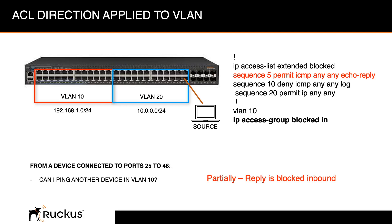To fix the partially blocked scenario, we can add a new statement to our ACL. We've added sequence 5: before the block, we permit ICMP any echo-reply. So we're still not permitting ping — we're just allowing ping replies. Now, if I'm a device coming from VLAN 20, I can ping across to VLAN 10, and that device can reply. Its reply is now allowed to get back to VLAN 20. Devices in VLAN 10 still can't initiate a ping anywhere, but this fixes the reply issue from the previous scenario.